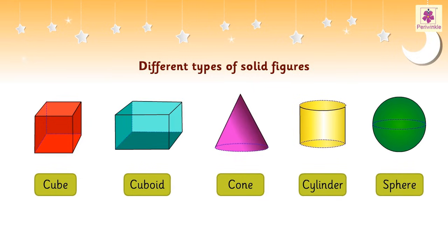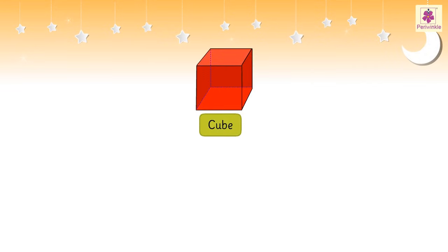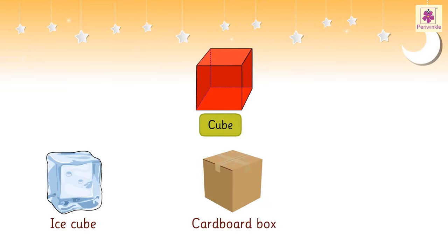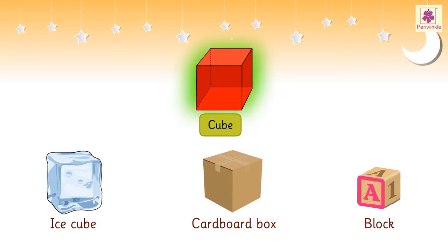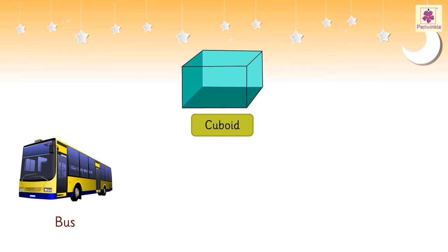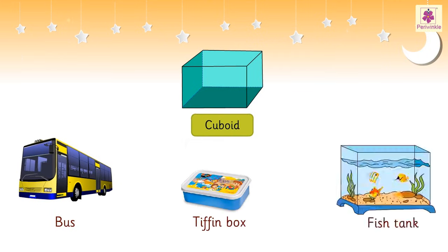This is a cube. An ice cube, a cardboard box, and a block are all examples of a cube.